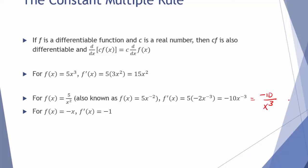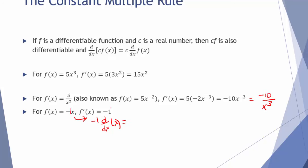For f of x equals negative x, we know that if f of x equals x, then the derivative is 1. When you take the derivative of f of x equals negative x, there is an implied 1 sitting in front of the x. So you take negative 1 times the derivative of x. The derivative of x is just 1, so that's how we get negative 1. That's the constant multiple rule.